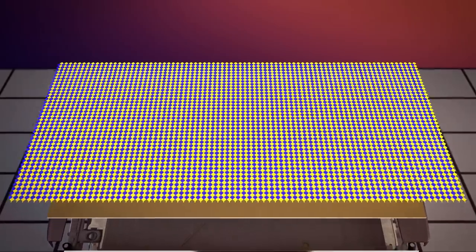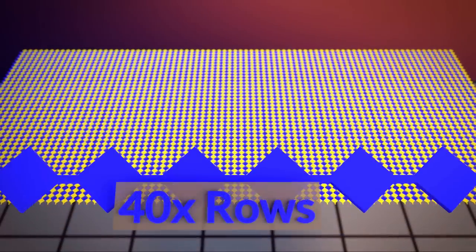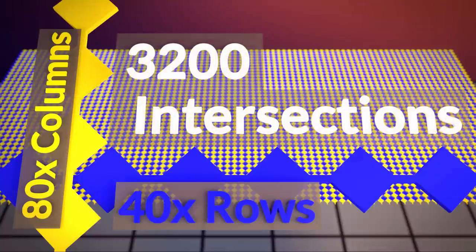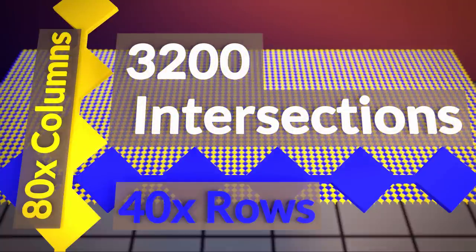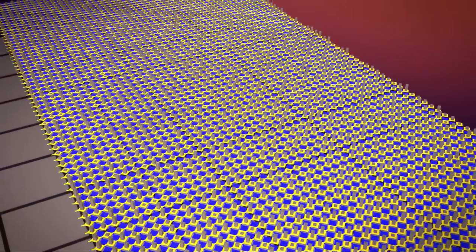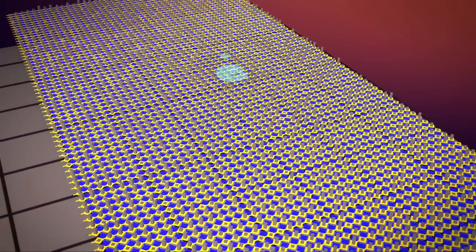This touchscreen is made of 40 rows colored in blue and 80 columns colored in yellow. The result is a grid with over 3200 intersections, and your phone can sense a touch at each of those intersections. We'll get into how it does that shortly, but for now, when you type out a message, your phone detects a pattern that looks like this.